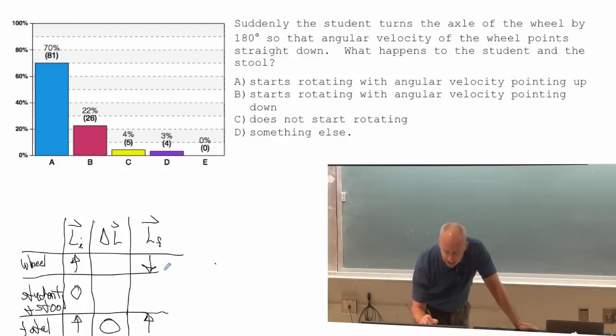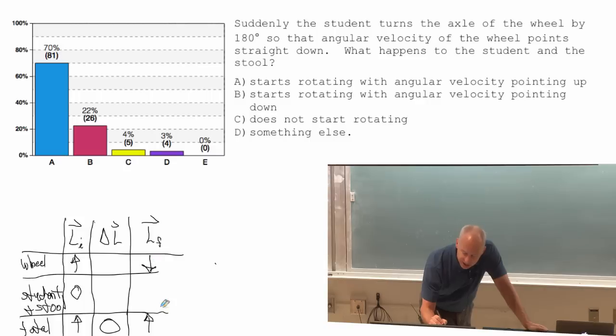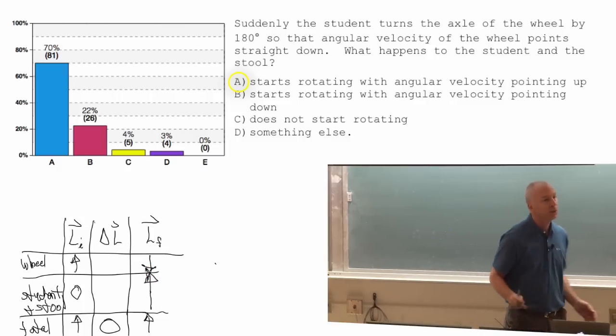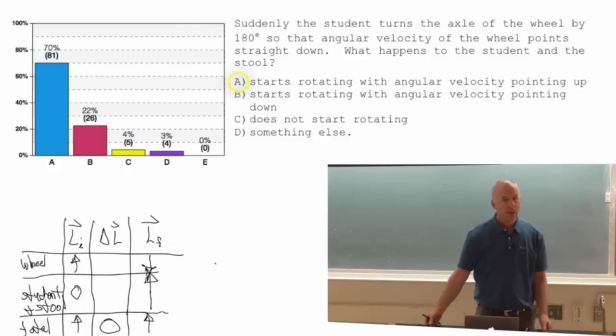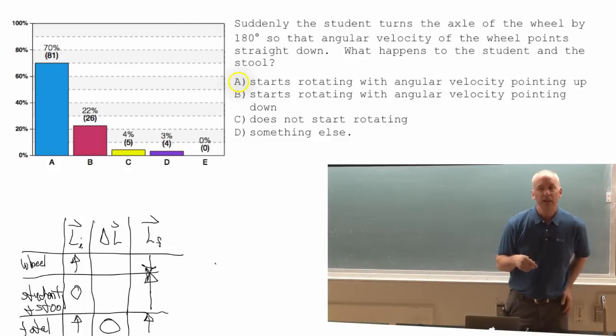Or I could just say, angular momentum's conserved. If this plus her equals the total, then her angular momentum, in the end, her plus the stool, has to be twice as big as the angular momentum of the wheel. So that the total angular momentum is still upward.